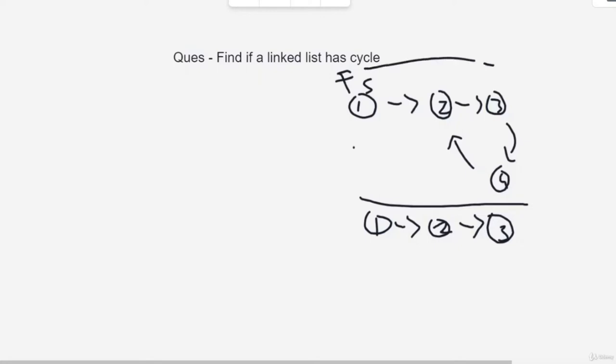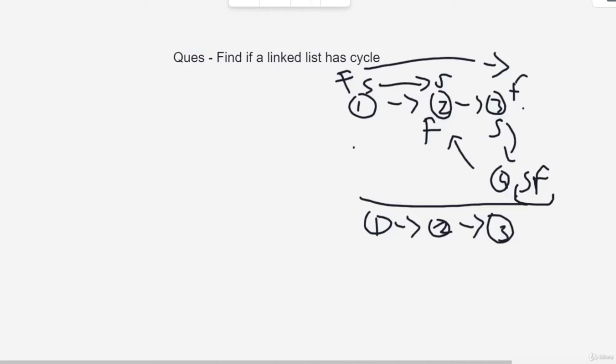What we do is have one fast and one slow pointer. We move fast two steps per iteration and slow one step. When fast is here, slow is here; then fast comes back here and slow is here; then in the next iteration both slow and fast are at the same node. So if slow and fast match, the linked list has a cycle. If they do not match, there is no cycle. If there is a cycle and fast moves at twice the speed of slow, it is guaranteed they will meet within at most two rounds of the cycle.